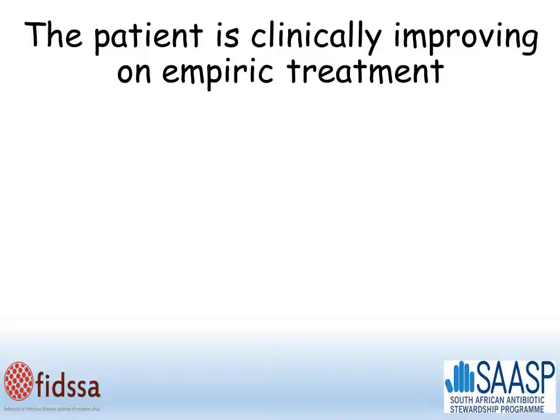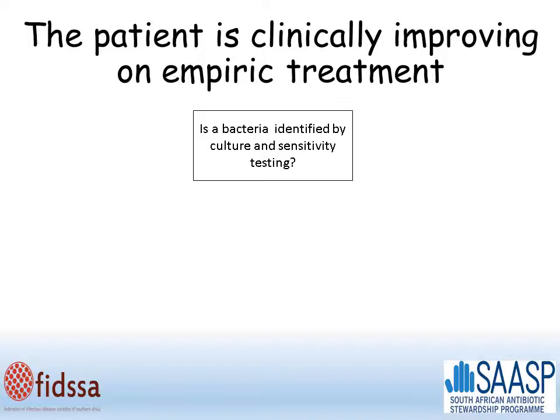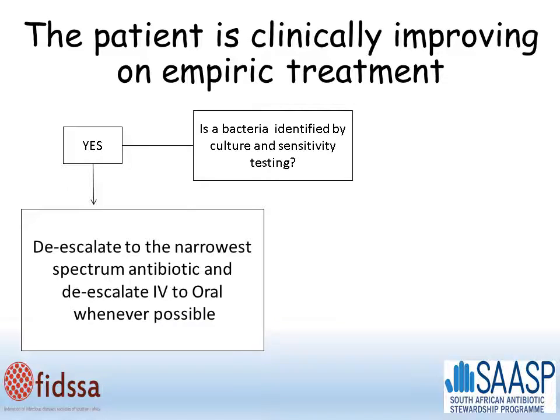If your patient is clinically improving on the empiric therapy you've chosen, you need to see if there's any positive microbiology to help you. If you have a bacteria identified and culture sensitivity is available, you should look to de-escalate your therapy. You should choose a new antibiotic which covers the infection you're treating but has the narrowest possible spectrum of activity, and if possible that should be an oral drug so that you can make an IV to oral switch.